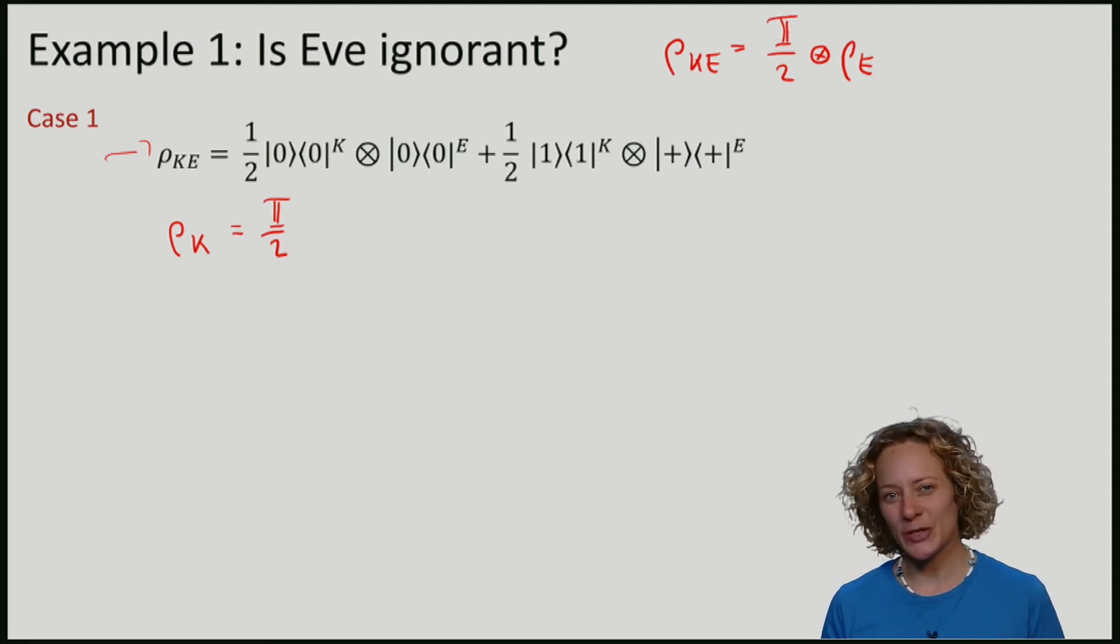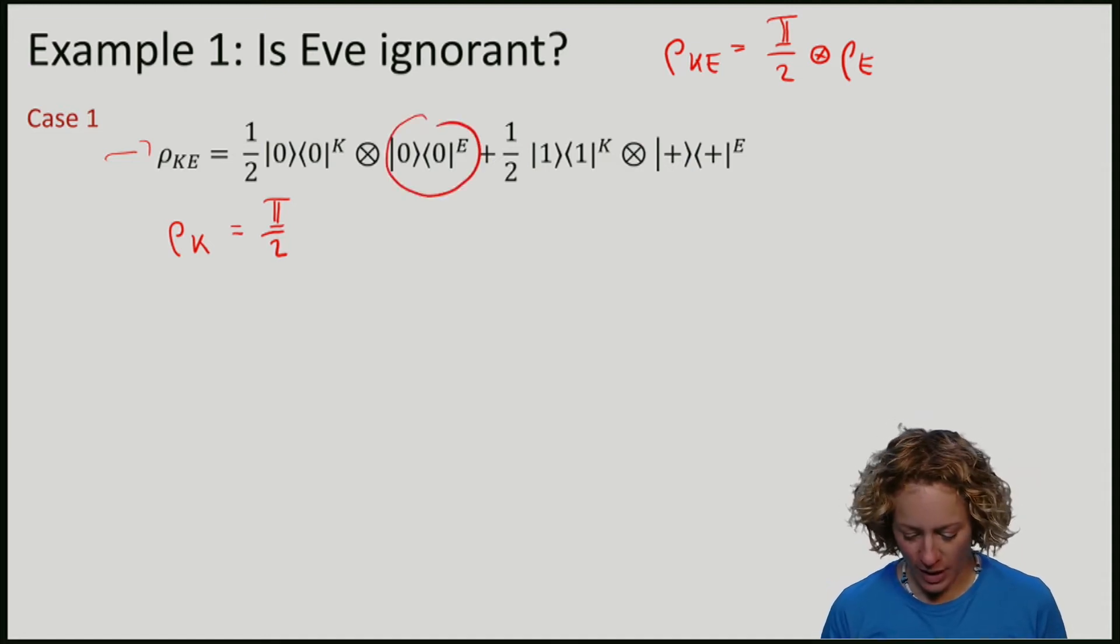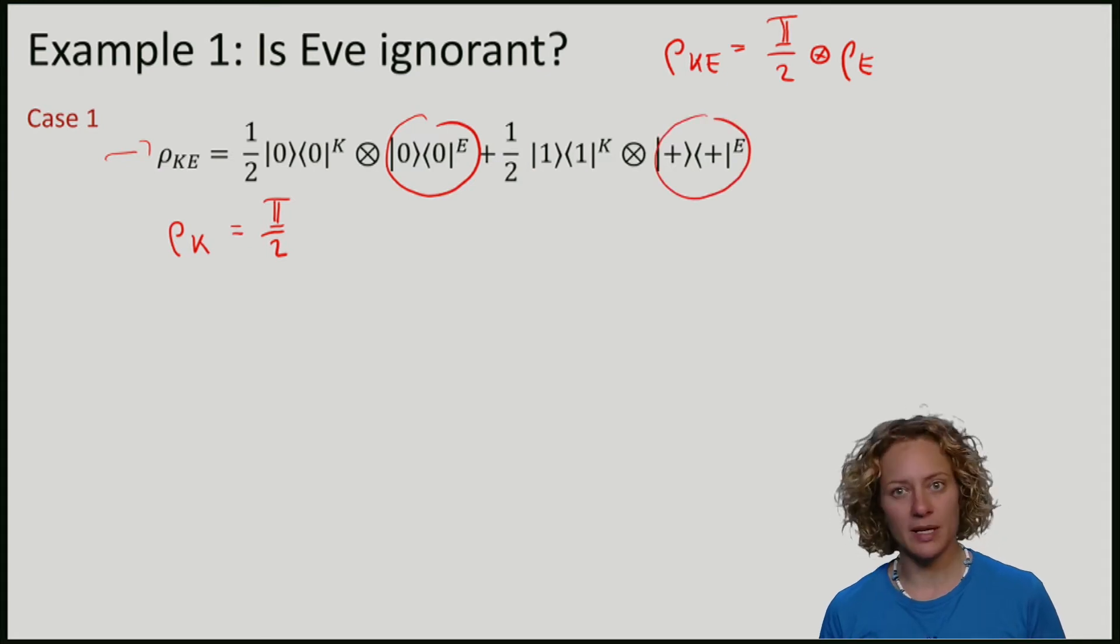But the state on e certainly depends which state we have on k. For zero we have here the zero state, but for one I have here the plus state. Zero and the plus state are not the same. So Eve has some information about the key.